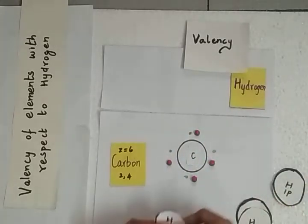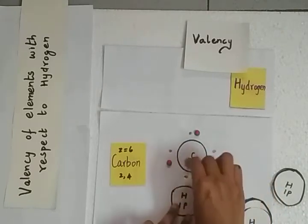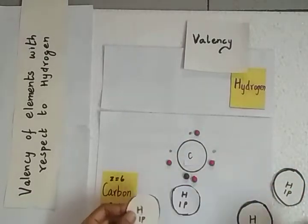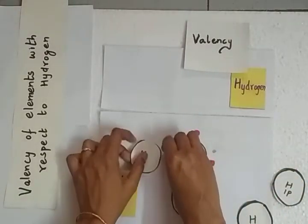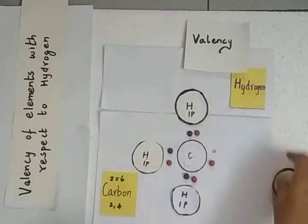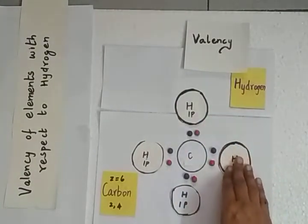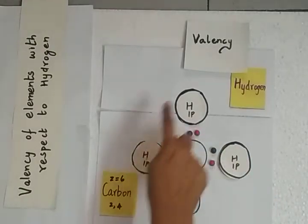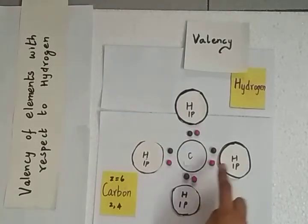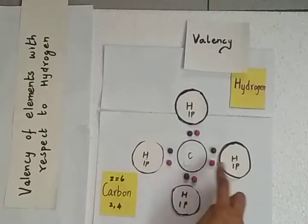Carbon will form bonds with 4 atoms of hydrogen. Each hydrogen shares one electron with carbon, completing a pair. Carbon bonds with 4 hydrogen atoms by sharing all 4 of its valence electrons, and each hydrogen also achieves stability through this sharing.